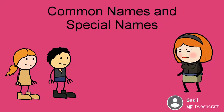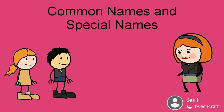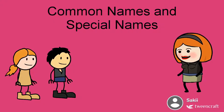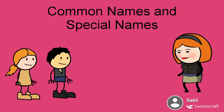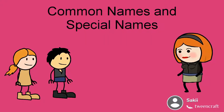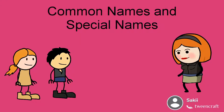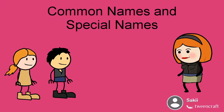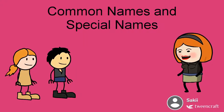Pahle aapko ek example se samjhane ki koshish karenge. Jaisi ki agar ham sab class mein hai, to ma'am ne kaha 'one boy please come here.' Iska matlab class mein ma'am kisi bhi boy ko bula raha hai — koi bhi boy aa sakta hai. Lekin agar ma'am ne ek specific naam lekar kaha: 'Daks please come here,' to ma'am sirf Daks ko bula raha hai. Daks ek special naam ho gaya, aur 'boys' ek common name ho gaya — yani ki koi bhi boy.